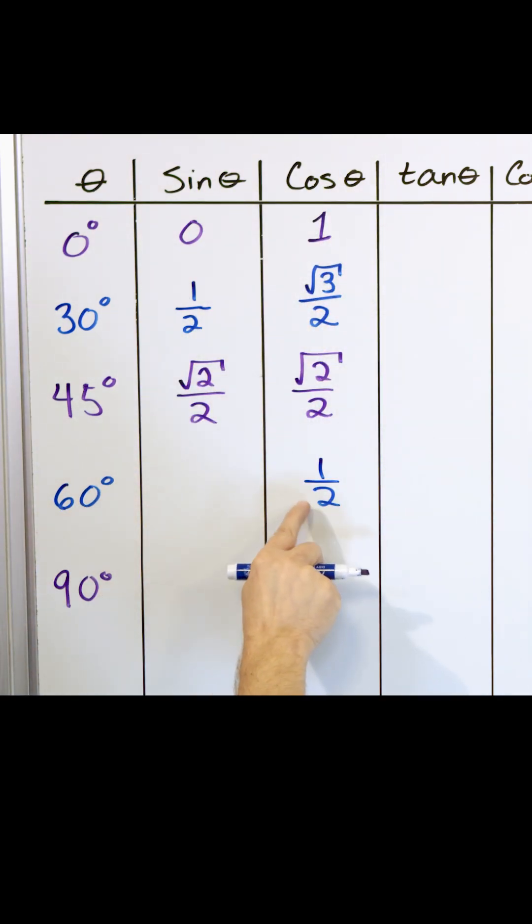And if the cosine of 60 is one half, what do you think the sine of 60 will be? It's gonna be the other special number, square root of three over two. And you see what's happening?